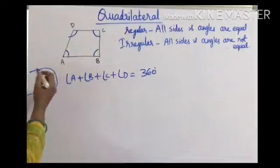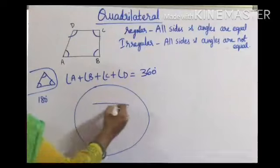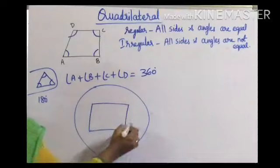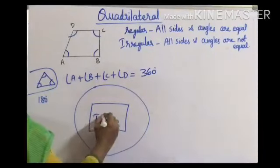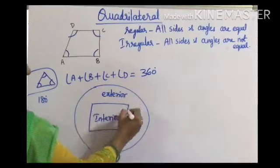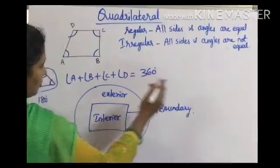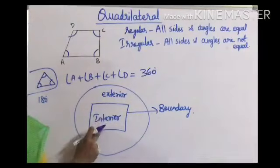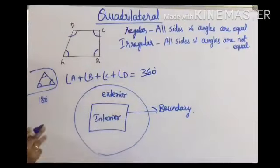Like a triangle, a quadrilateral divides a plane into three parts: the interior of the quadrilateral, the exterior of the quadrilateral, and the boundary of the quadrilateral.